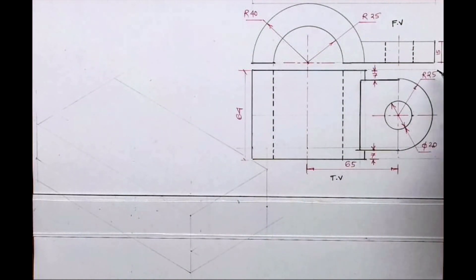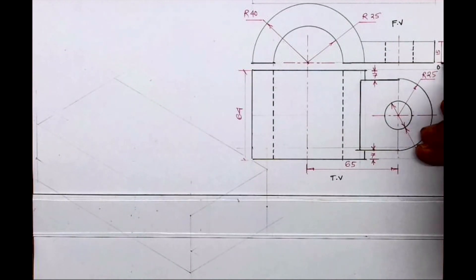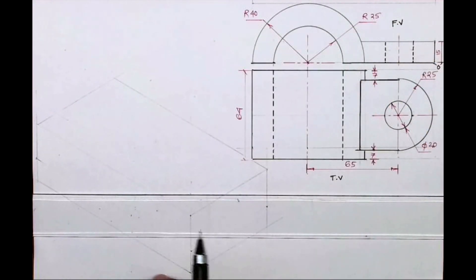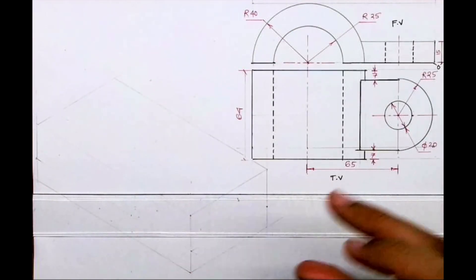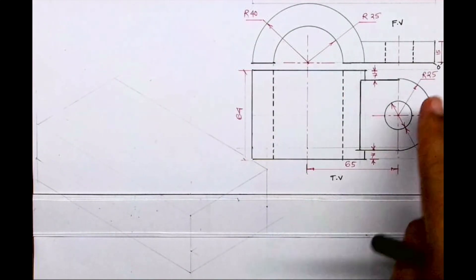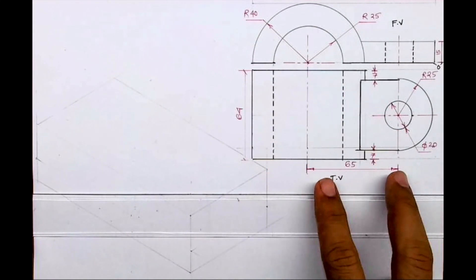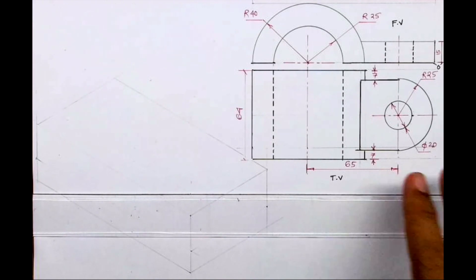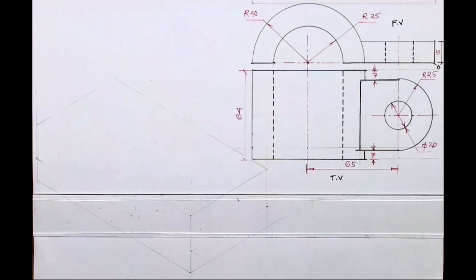So we will start with this front view and the circle part. Origin is over here. We will take length towards left and width here and height here. See length is how much: 25, 65 and 40 is length. Height is 40 and width is 64.